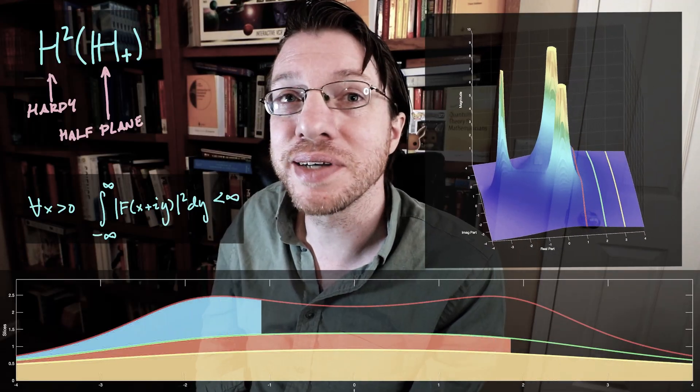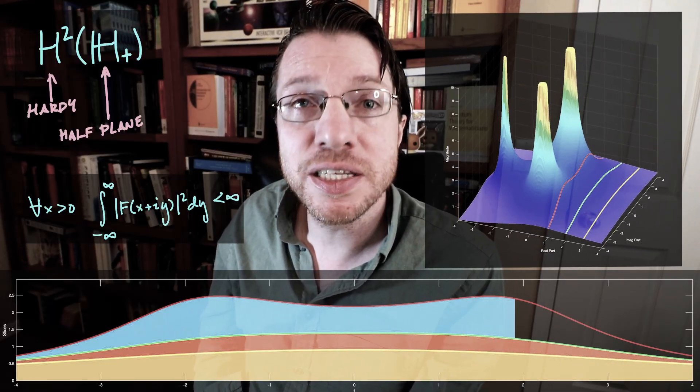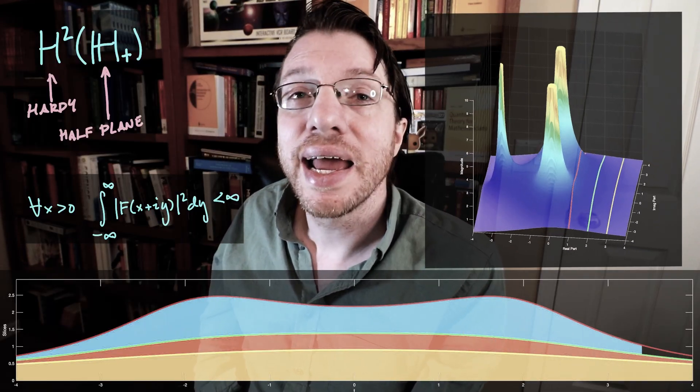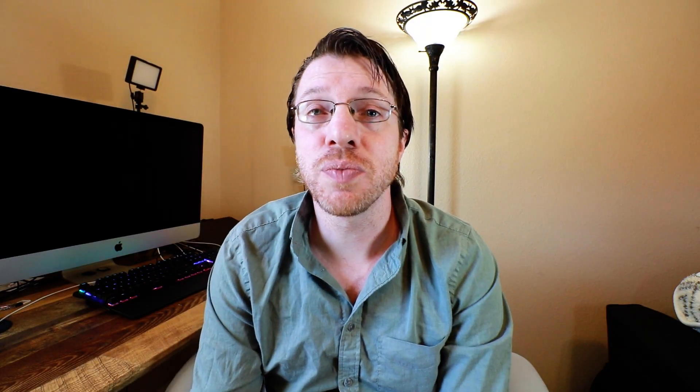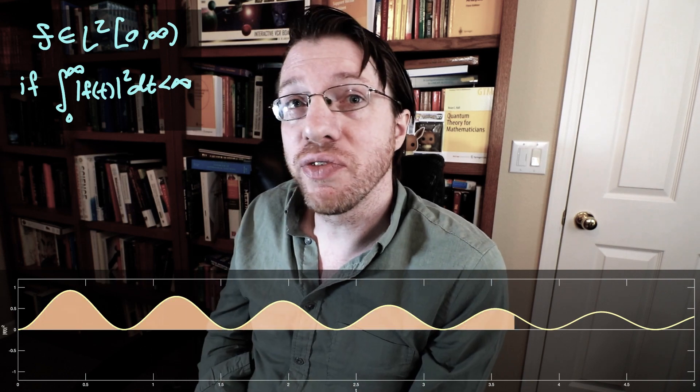Today what we're going to do is go backwards and see that if we have an analytic function on the right half of the complex plane that satisfies certain norm inequalities, we can actually recover an L2 signal. And this L2 signal is going to be supported only on the right half of the real line. This is going to require a bit of complex analysis, Fourier analysis, and also a touch of real analysis.